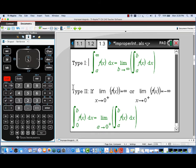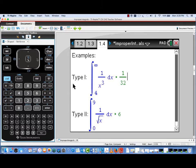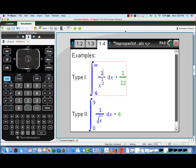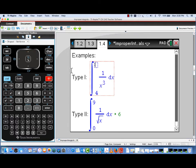All right, let's look at what the TI-Inspire does. Here's a couple of examples where we have math boxes for both a Type 1 and a Type 2 improper integral. This first one is the integral from 4 to infinity, 1 over x cubed. The second one, Type 2, is the integral from 0 to 9, 1 over the square root of x.